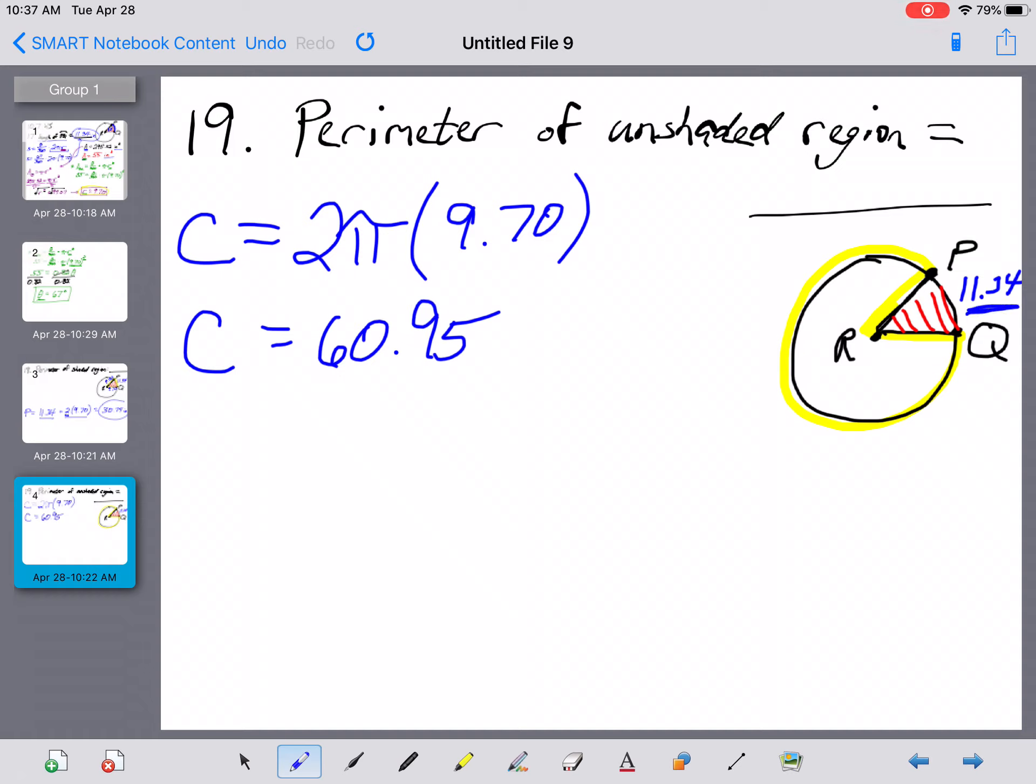This arc over here we knew was 11.34. So if I want to find the length of this arc over here, this component of it out here, well, the whole circle is 60.95.